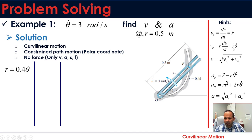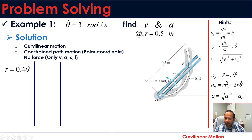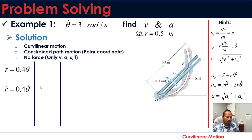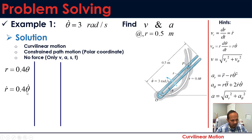For the velocity components, we need r_dot and theta_dot. For the acceleration components, we need r_double_dot, theta_dot squared, and theta_double_dot. r is given as 0.4 times theta, so we must carefully take derivatives. r_dot equals dr/dt — since r is a function of theta and not directly of time, we must use the chain rule.